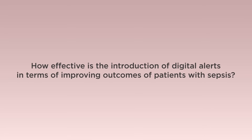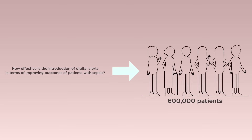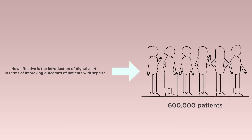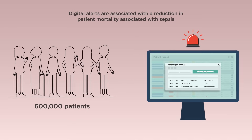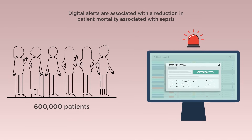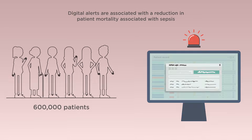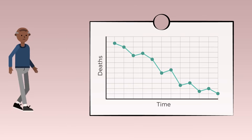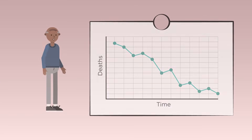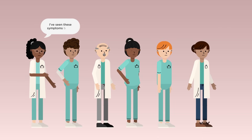The DIAL study research team addressed the question of how effective the introduction of digital alerts is in terms of improving outcomes of patients with sepsis. EPR data from over 600,000 patients across multiple NHS hospitals were used. Our results showed that across all hospitals, the implementation of digital alerts correlated with a reduction in patient mortality associated with sepsis, with older people benefiting the most.